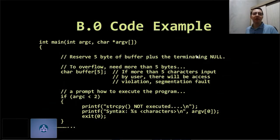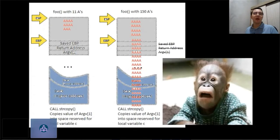Here we have a code example of buffer overflow. We have a variable buffer with size 5 bytes. What's the problem with this code? The problem is that the code doesn't verify what it should do if the user inserts more than 5 bytes. So if the user inserts more than 5 bytes, it will cause a stack overflow. In the left image, variable flow with 11 A's; in the right image, variable flow with 150 A's causes a stack overflow — overwriting registers ESP and EBP.